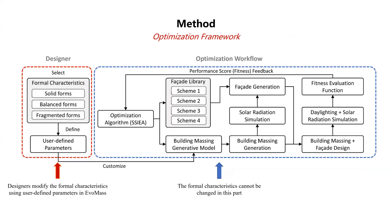In terms of the method, we combine the methods used in our previous studies. On the right hand side is the design optimization workflow for the facade-massing integrated generation. The building massing is first generated using EWMS and then the optimization algorithm. We also choose one of the facade schemes and use the solar radiation as an indicator to generate the facade pattern on the surface of the generated building massing, then combine the facade and building massing together and run another round of evaluation like daylighting. The user can also use user-defined parameters in EWMS to define different formal characteristics.